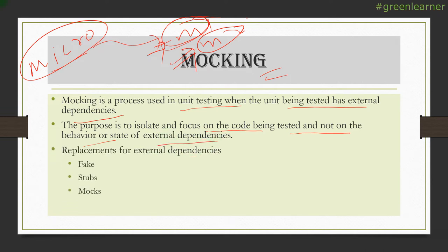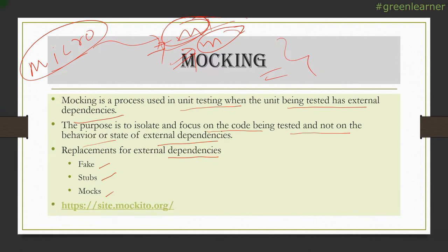External dependencies are tested in integration tests. For unit testing, we use mocking as a replacement for those external dependencies — we can fake them, stub them, or mock them. We fix the output that the external dependency is giving you so your unit under test sees a predictable result. For mocking in Java we are going to take advantage of the Mockito library.